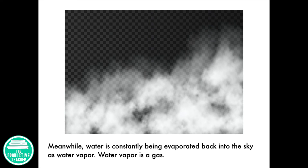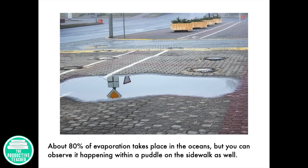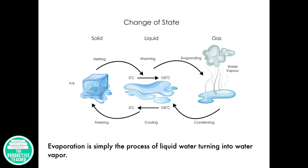Plants release excess water through their leaves as water vapor through a process called transpiration. Meanwhile, water is constantly being evaporated back into the sky as water vapor. Water vapor is a gas. About 80% of evaporation takes place in the oceans, but you can observe it happening within a puddle on a sidewalk as well. Evaporation is simply the process of liquid water turning into water vapor.